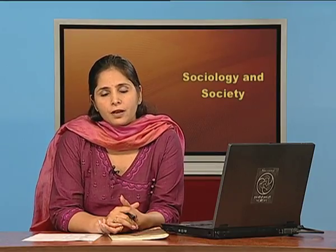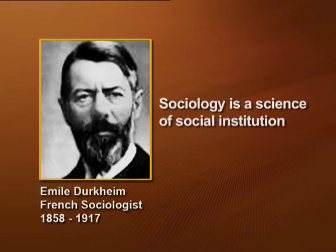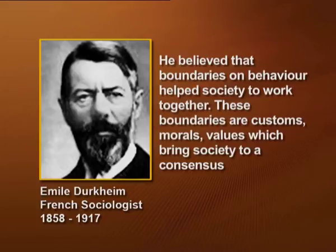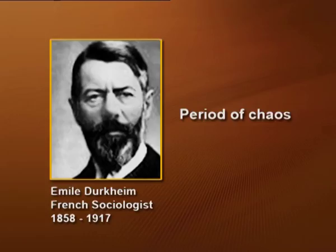The second definition is given by Emile Durkheim, who says sociology is a science of social institutions. Society consists of different parts and structures that work in coordination with each other. Durkheim believed that boundaries on behavior — customs, morals, and values — bring society to a consensus. When these boundaries break, the intervening period where one value is discarded and new values are not yet established he called a period of chaos, which could be brief or long.